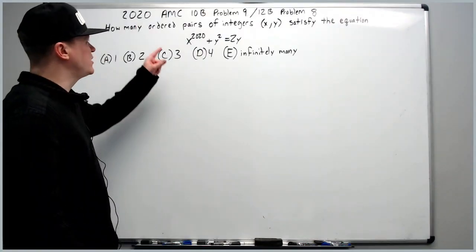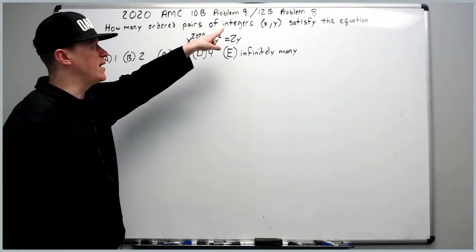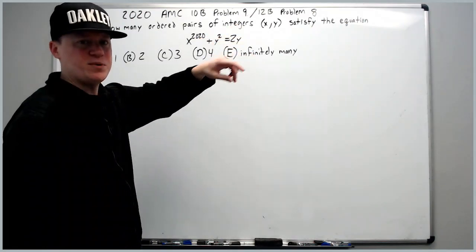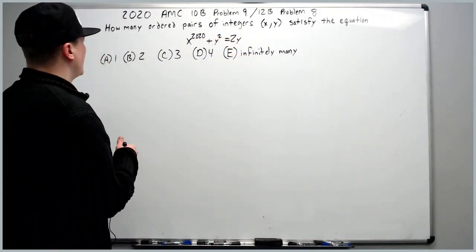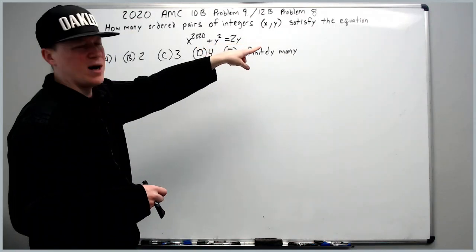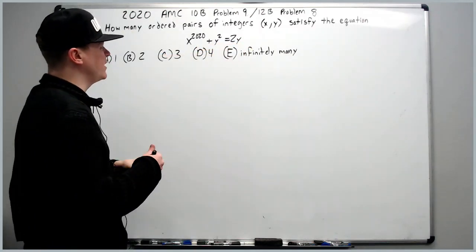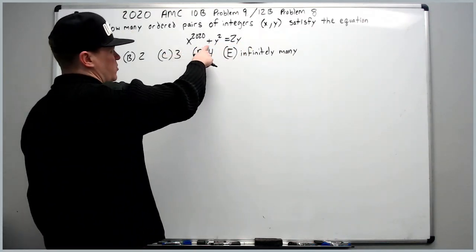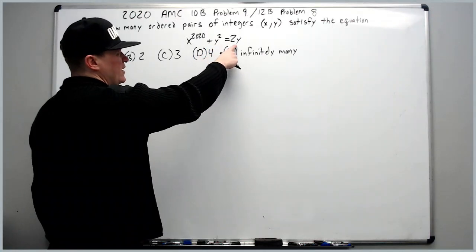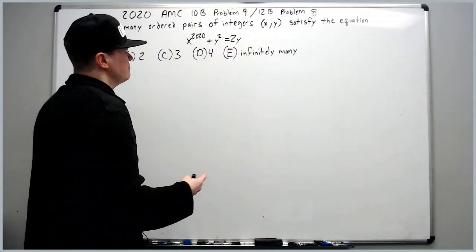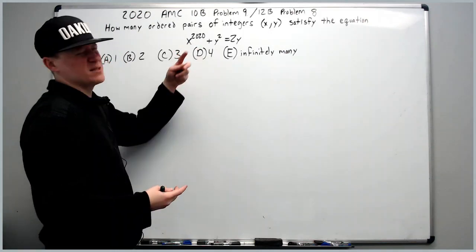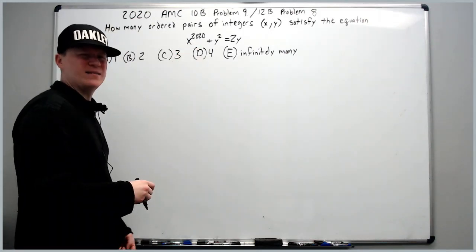Okay, and now for the 2020 10B problem number 9, which was also the 12B problem 8. How many ordered pairs of integers (x,y) satisfy the equation x to the 2020 plus y squared equals 2y?